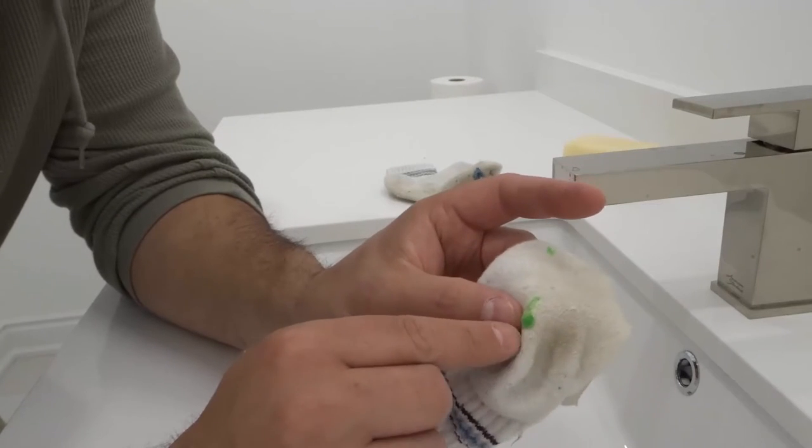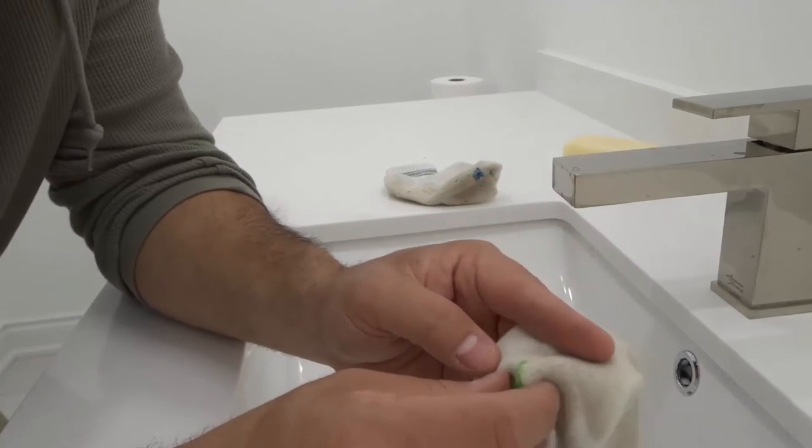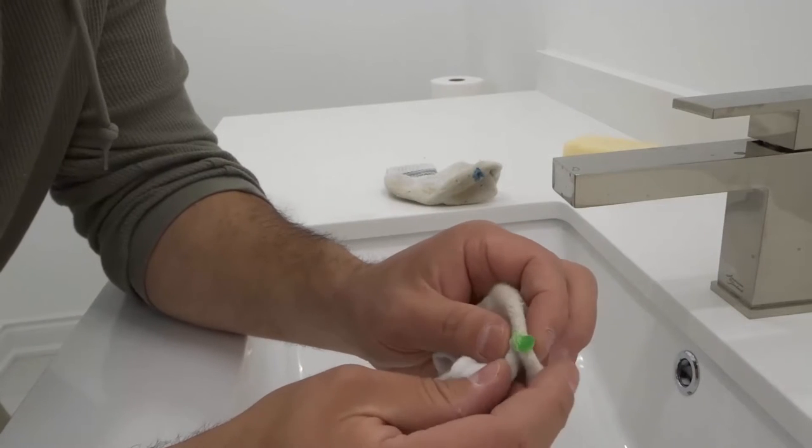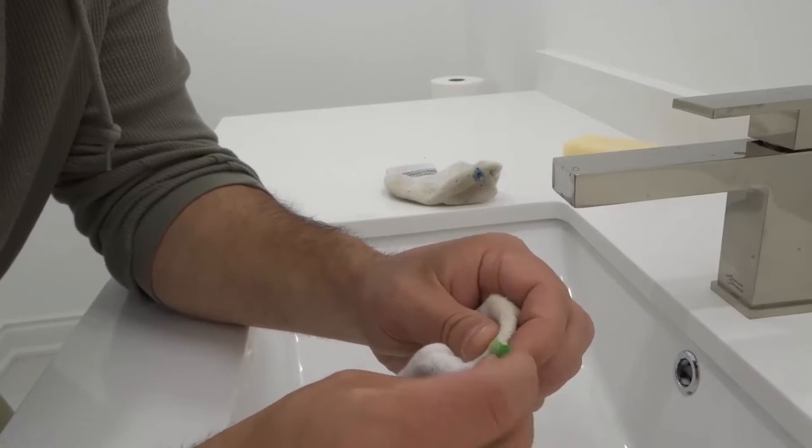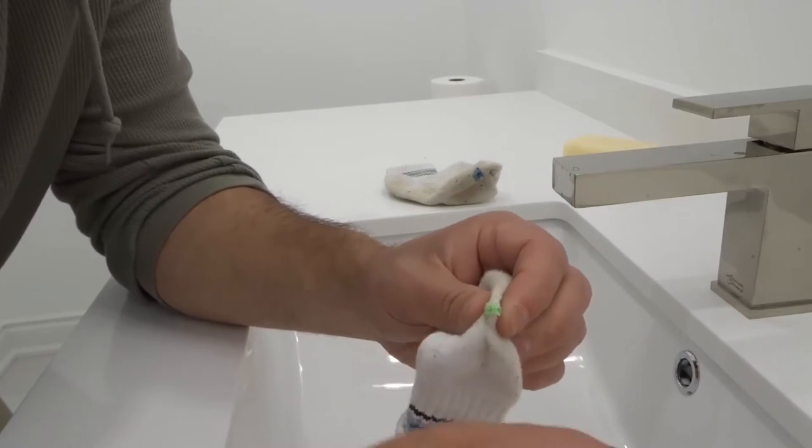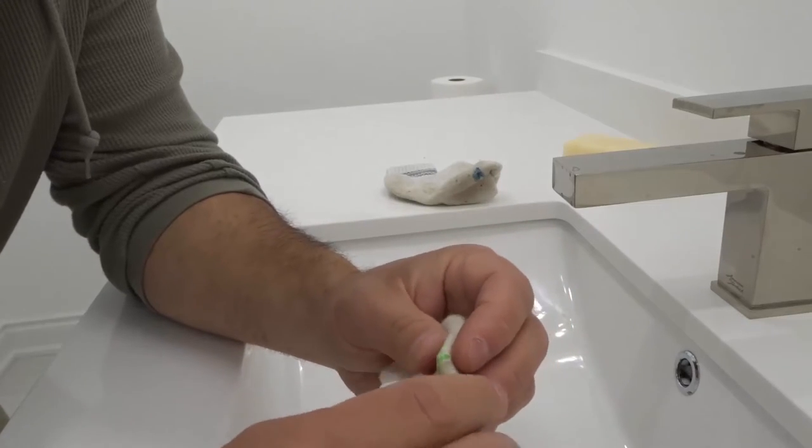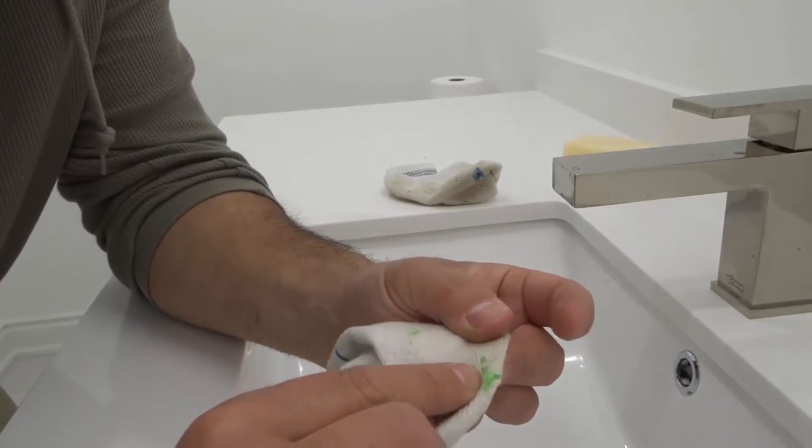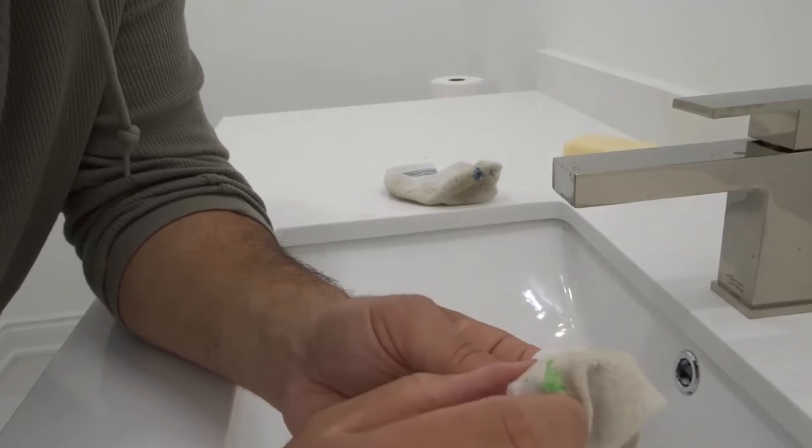But if it's a bigger spot like this, then you're probably going to have to scrape at it quite a bit. You could use your finger to pry up any big clumps, but then for all the remaining little spots, you're going to have to scrape it off.